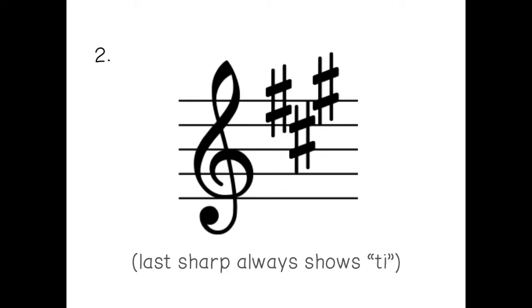Question two. True or false again? And I've given you a reminder at the bottom that the last sharp always shows ti. So true or false, this key signature could show F sharp minor.